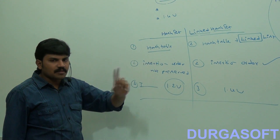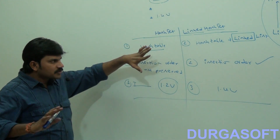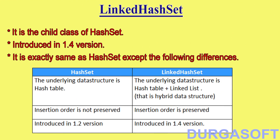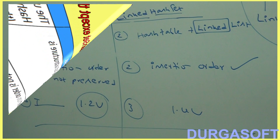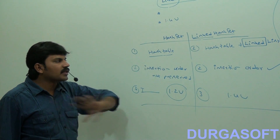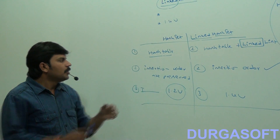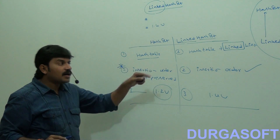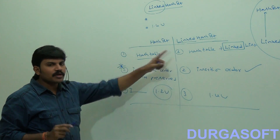So LinkedHashSet is essentially a small variation of HashSet. This is the only major important difference: if you don't want duplicates but order is required, then you should go for LinkedHashSet.